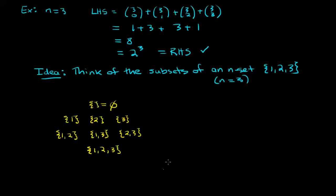So we start writing down the subsets. The first subset is the empty subset, which can also be written with the empty-set symbol. For subsets of size one, we could have just the element one, or just the element two, or just the element three. For size two, we could have one with two, or one with three, or two with three. And for size three, we have to take the whole set: one, two, and three. There is indeed one subset of size zero, three of size one, three of size two, and one of size three.